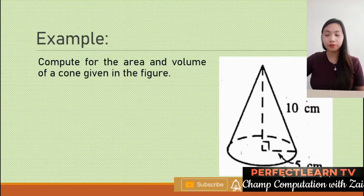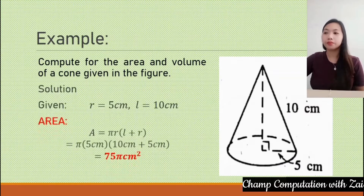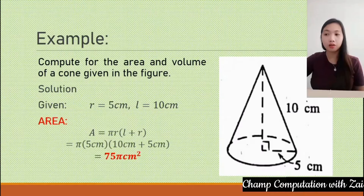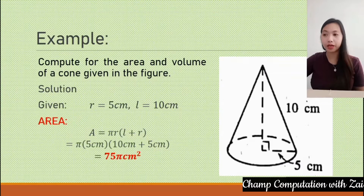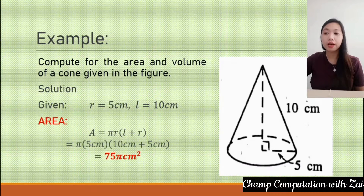Let us apply the formula for the area and volume of a cone to the given figure. We have a given radius of 5 cm and a slant height of 10 cm. To find the total area, we use πR(L + R): π multiplied by 5 cm, multiplied by the quantity (10 cm + 5 cm), giving a total area of 75π square centimeters.